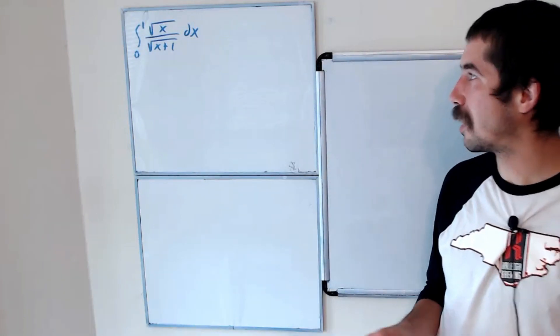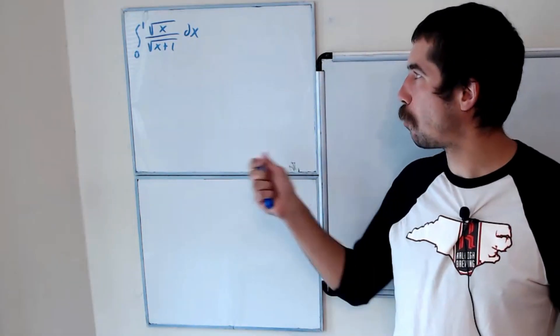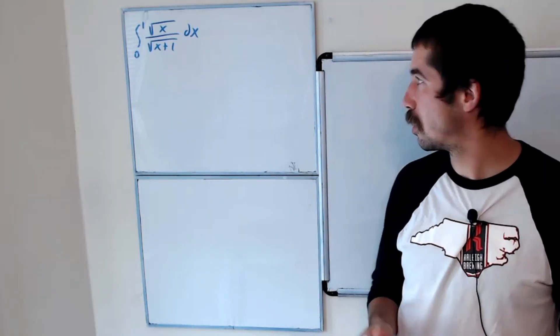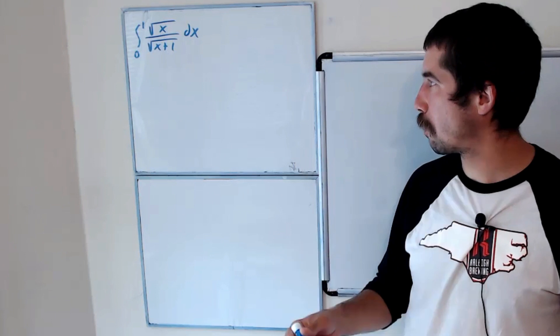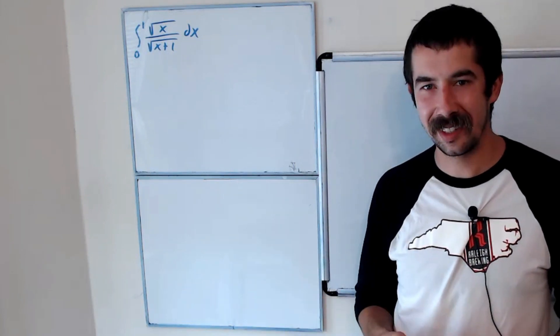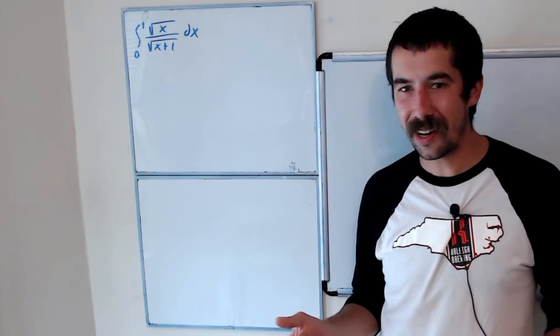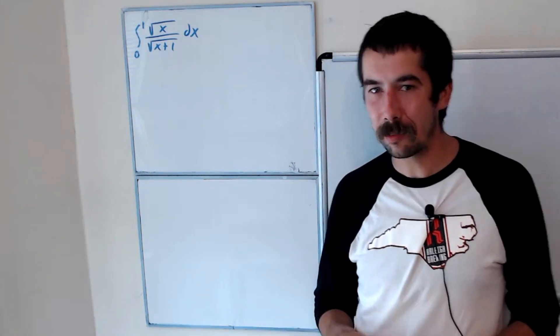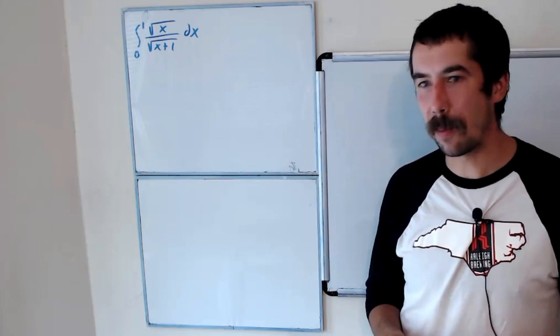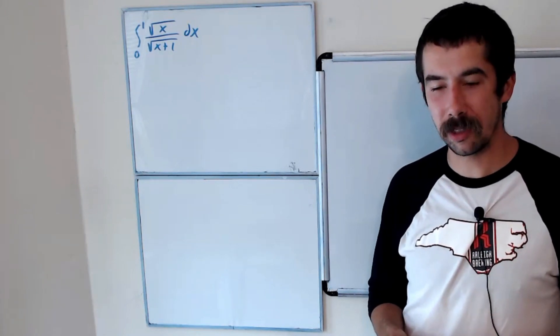Today we're going to evaluate the integral from 0 to 1 of the square root of x over the square root of x plus 1 dx. Try it on your own — this is actually pretty tricky, and let me know in the comments if you're able to solve it.